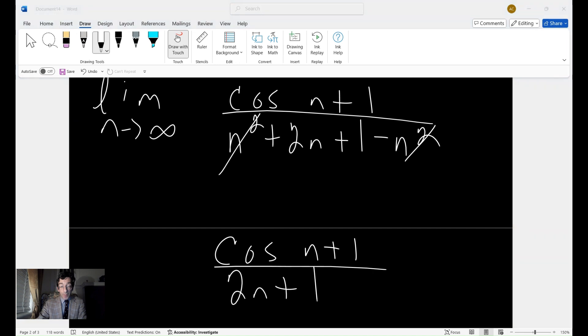And so because of that, we have, that's going to be equal to 0. Remember, very important to remember here that the value of the cosine of n plus 1 is bounded. Because the absolute value of the cosine of n plus 1 has to be less than 1.